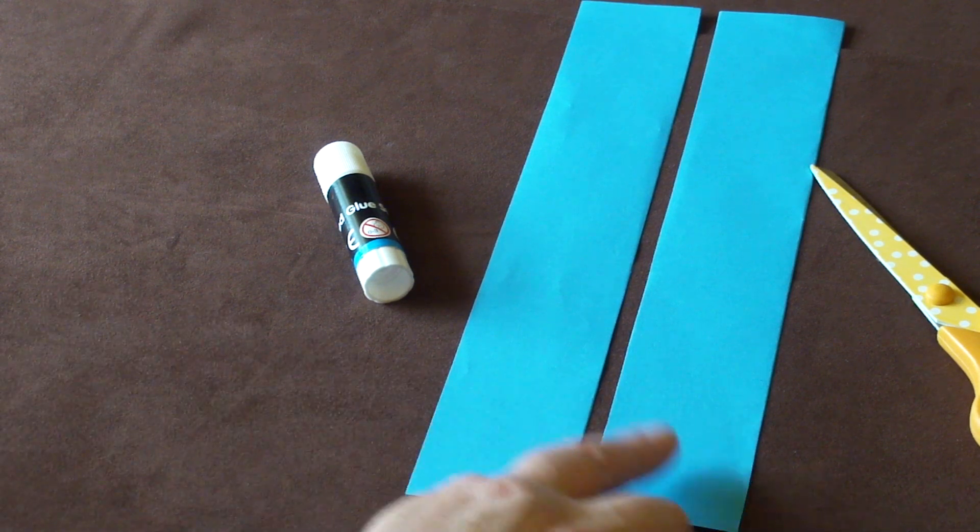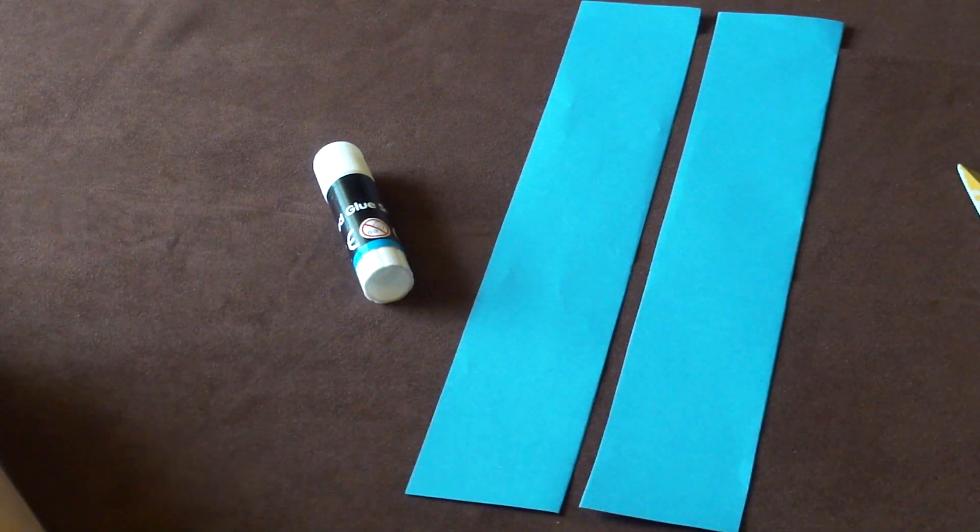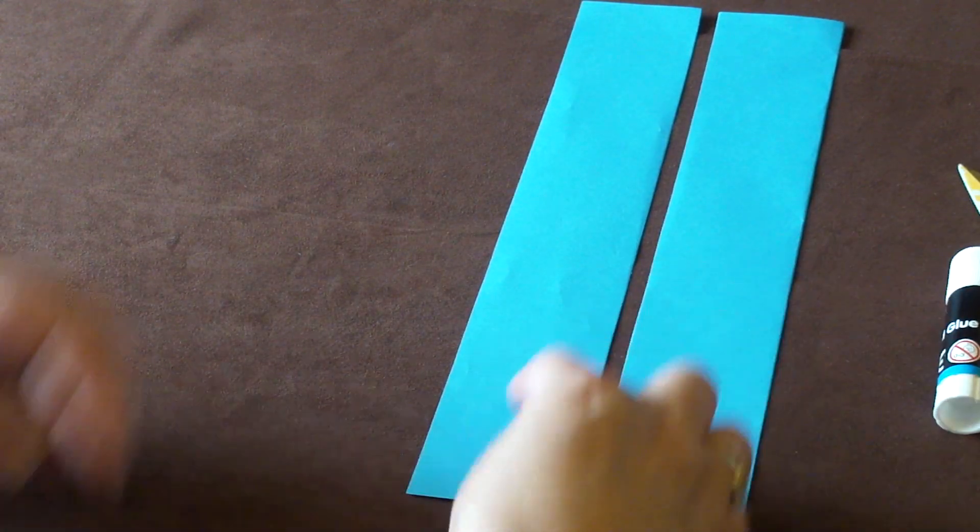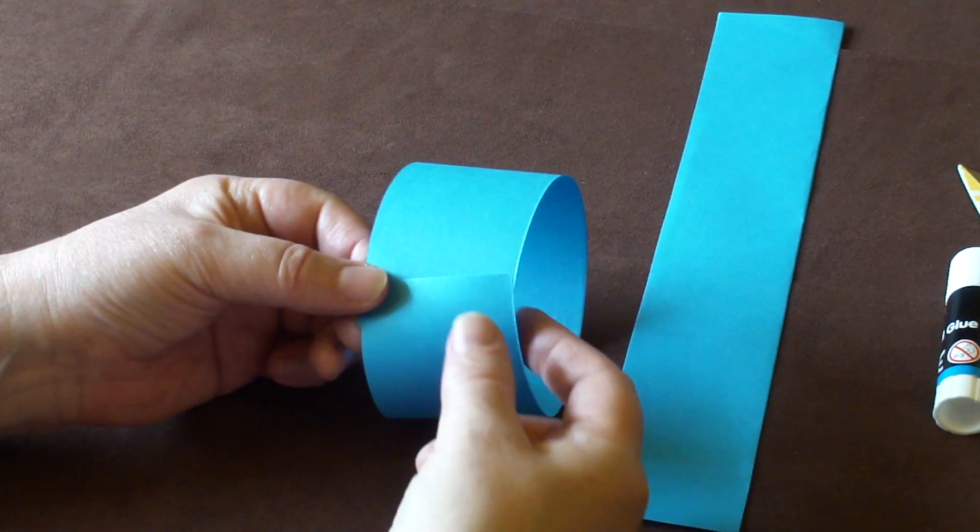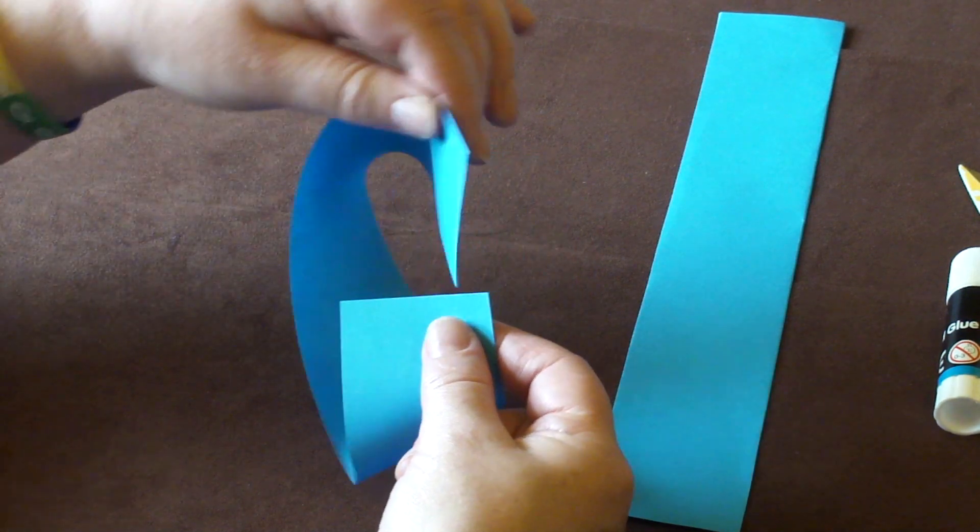We're going to use our two pieces of paper to make two Mobius strips. Those are things where you take a piece of paper, put it into a ring, but before you glue it, you give it a twist.